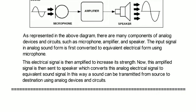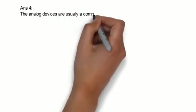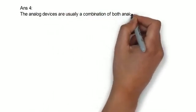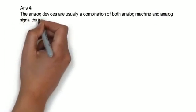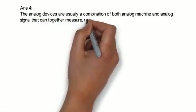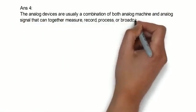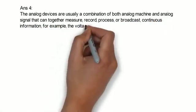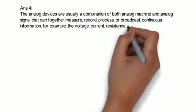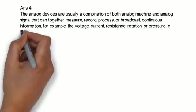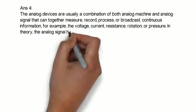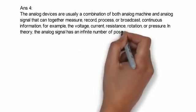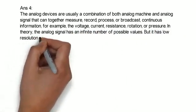The analog devices are usually a combination of both analog machine and analog signal that can together measure, record, process, or broadcast continuous information. For example, the voltage, current, resistance, rotation, or pressure. In theory, the analog signal has an infinite number of possible values, but it has low resolution which affects its accuracy.